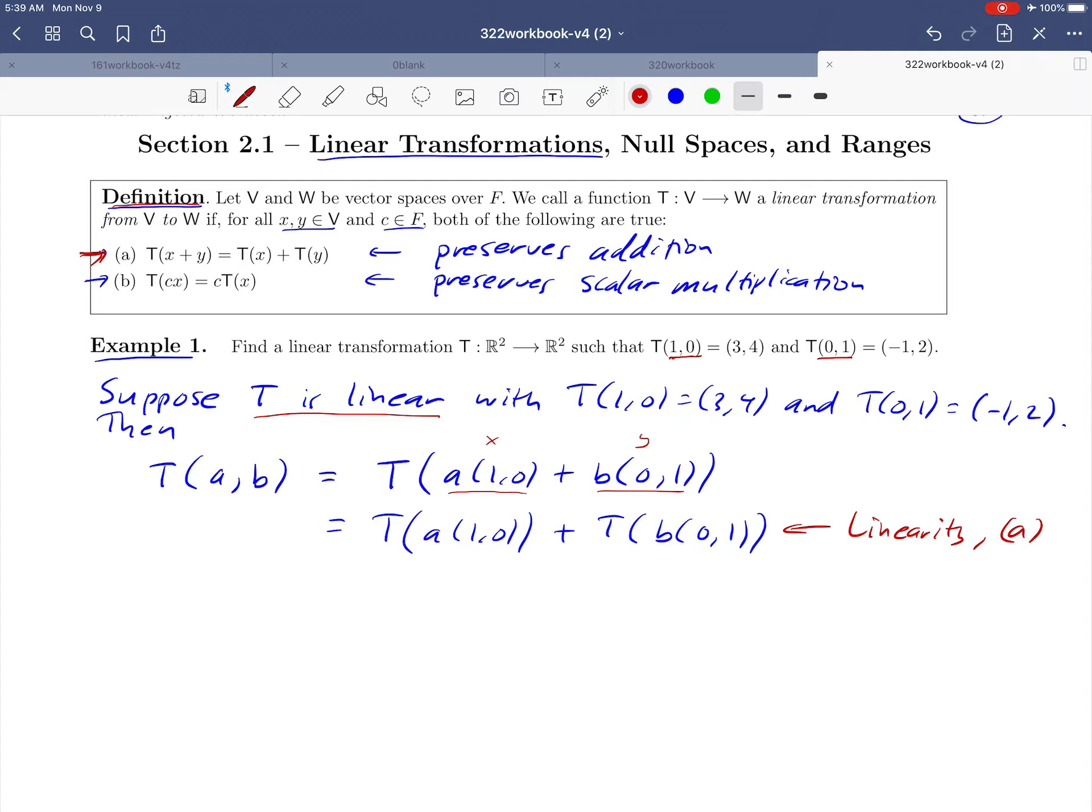But there's another property. If T is linear, we know that we can factor scalars out according to property B. So that means that T of a times (1, 0) is the same as a times T of (1, 0) plus b times T of (0, 1). There we're just using property B in the definition of a linear transformation. So this is by linearity property B.